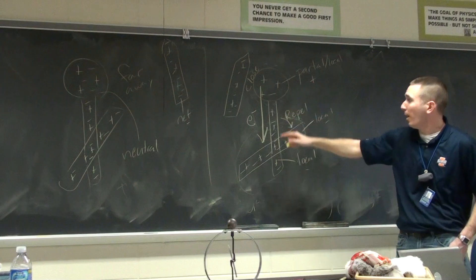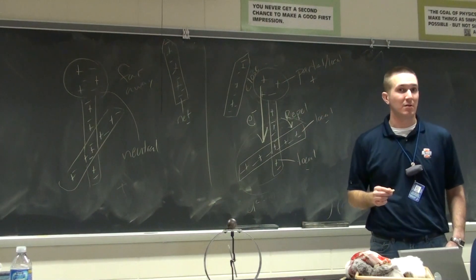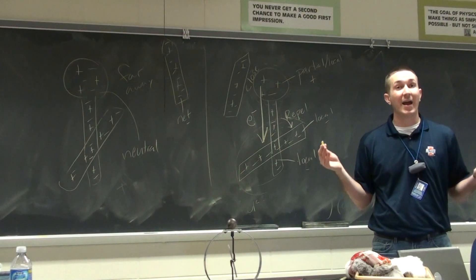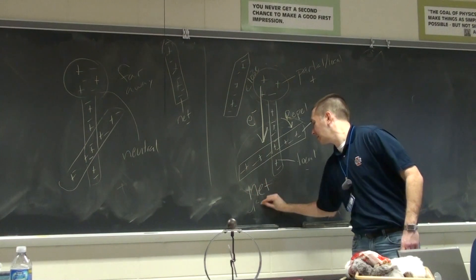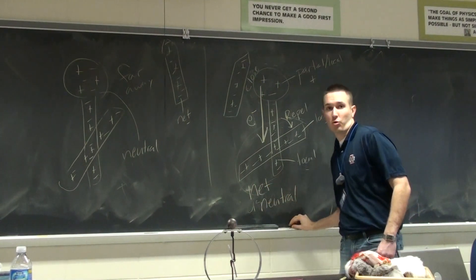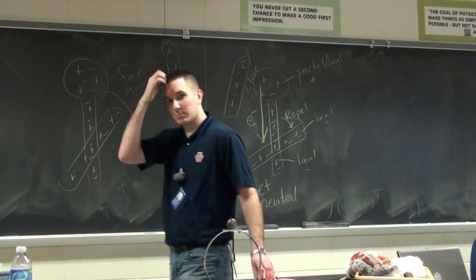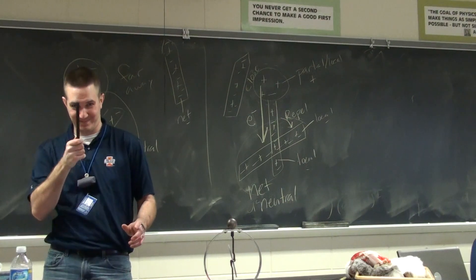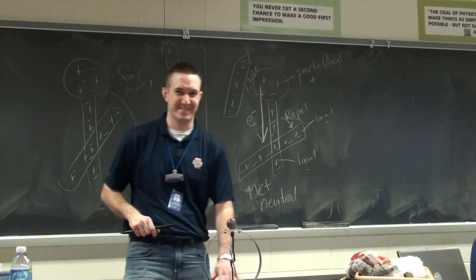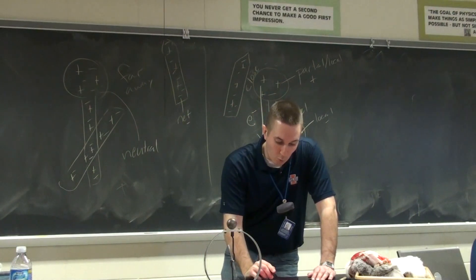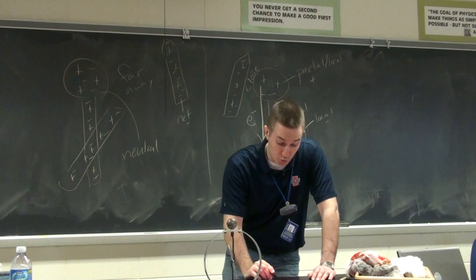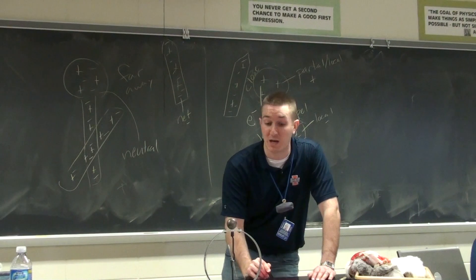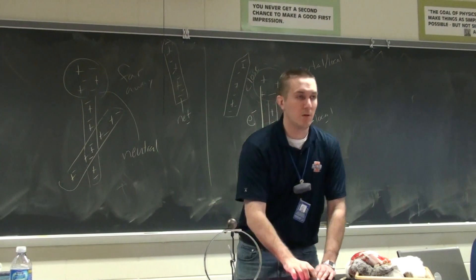Now if I counted up all of the electrons on the electroscope and compared to all of the protons, it's still net neutral. Okay. So what is the charge on the electroscope? Neutral. What is the charge near the top? Positive. Positive near the bottom? Negative.